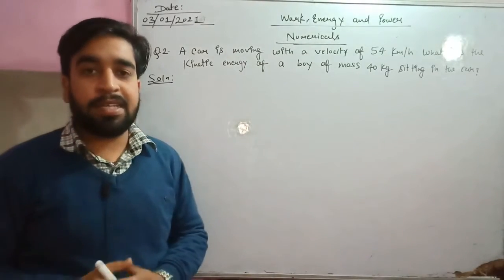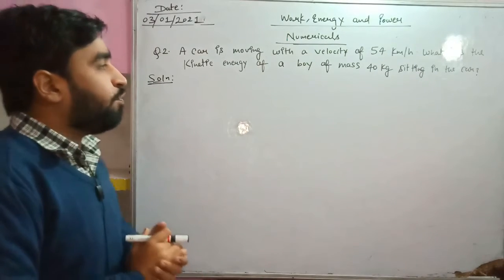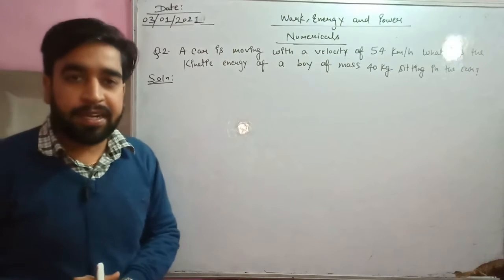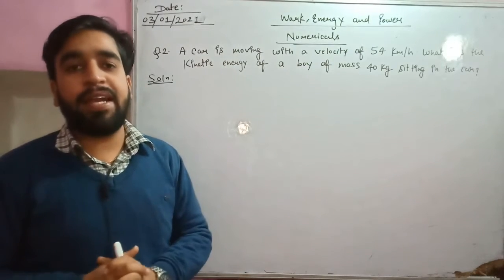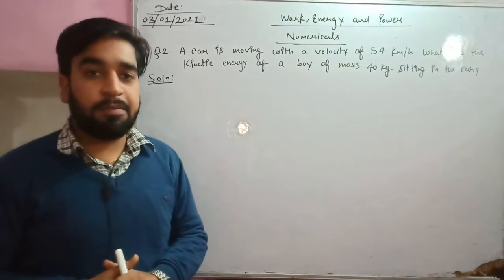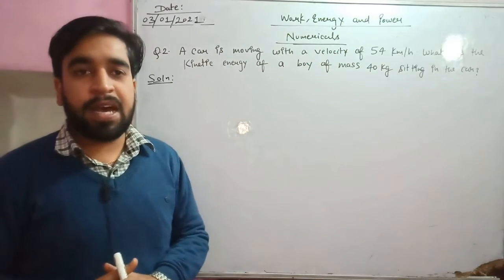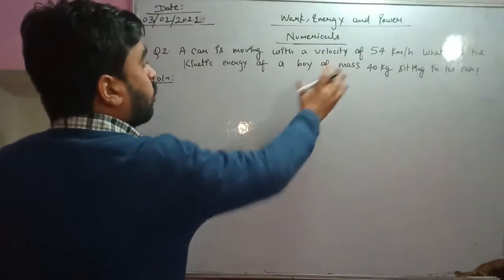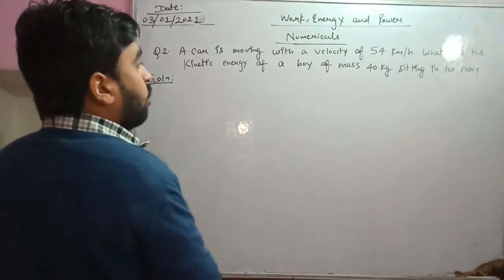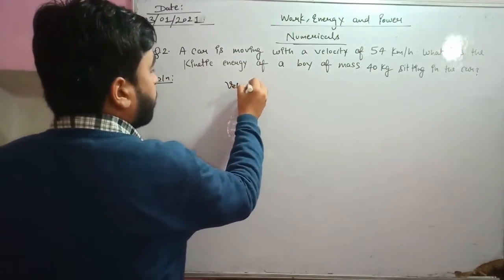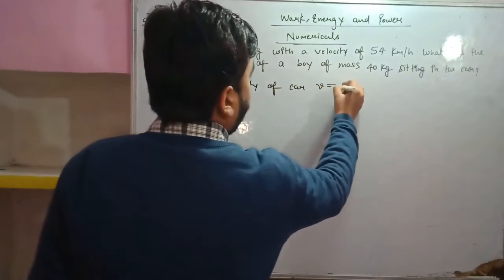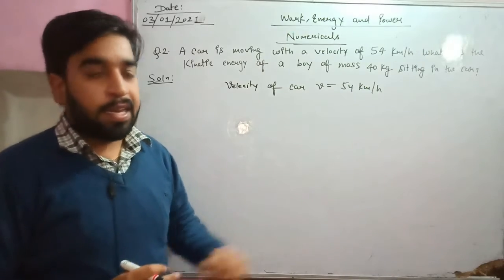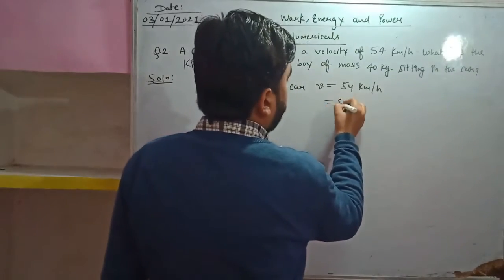The second question: a car is moving with a velocity of 54 km/h — what is the kinetic energy of a boy of mass 40 kg sitting in the car? The kinetic energy formula is KE = ½mv². In physics, velocity must always be in meters per second. So let's convert 54 km/h to m/s: 54 × (5/18) = 15 m/s.